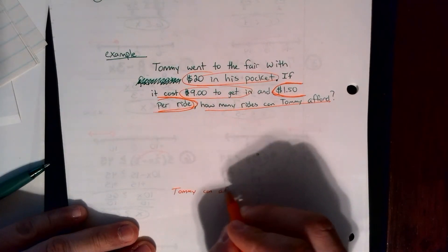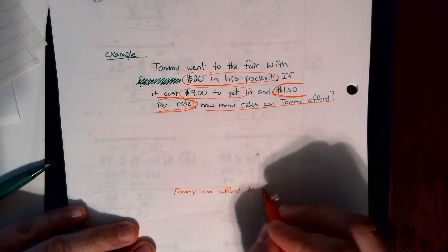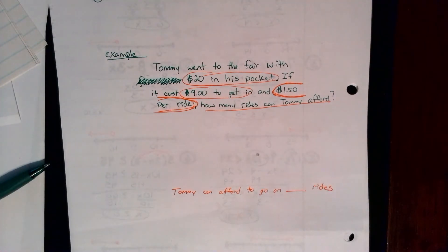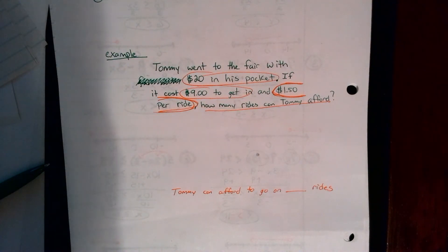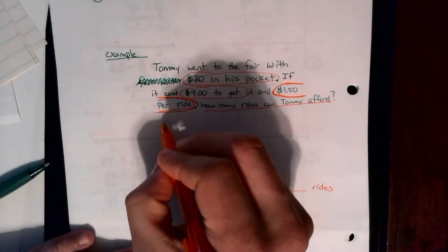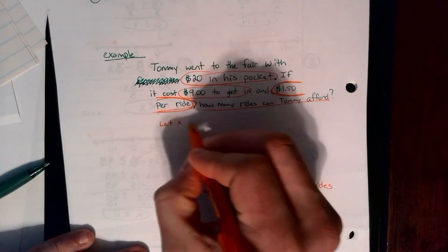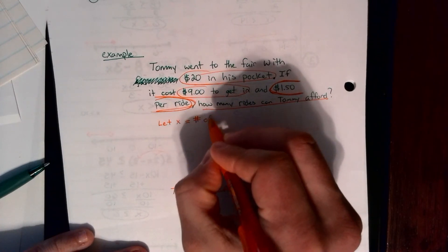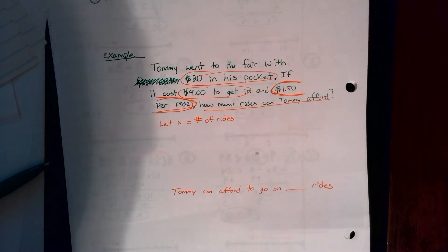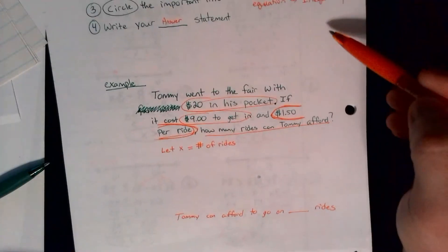So my answer statement would be down at the bottom here. Tommy can afford to go on blank rides. All right, so we did the whole regular part. So now I'm very focused on what I'm trying to accomplish here. And again, I made it pretty straightforward. You've all seen word problems that have all the extra information in it and try to confuse you. This can really help you for those more confusing problems as well. So now it's time for the let statement. So it's going to be the unknown thing. That's the number of rides. So I'm going to say let x equal the number of rides.